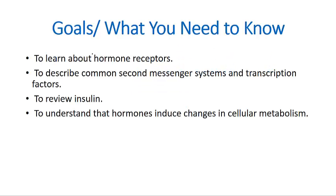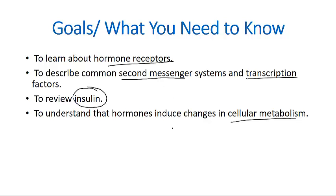The learning goals are: to learn about hormone receptors, to describe the common types of second messengers available inside the cell, and how transcription factors are associated in the activation of specific genes. We will also see the function of insulin and glucagon together to regulate blood glucose level, and understand how hormones induce changes in cellular metabolism. We will talk about this in two parts: water-soluble hormones and lipid-soluble hormones.